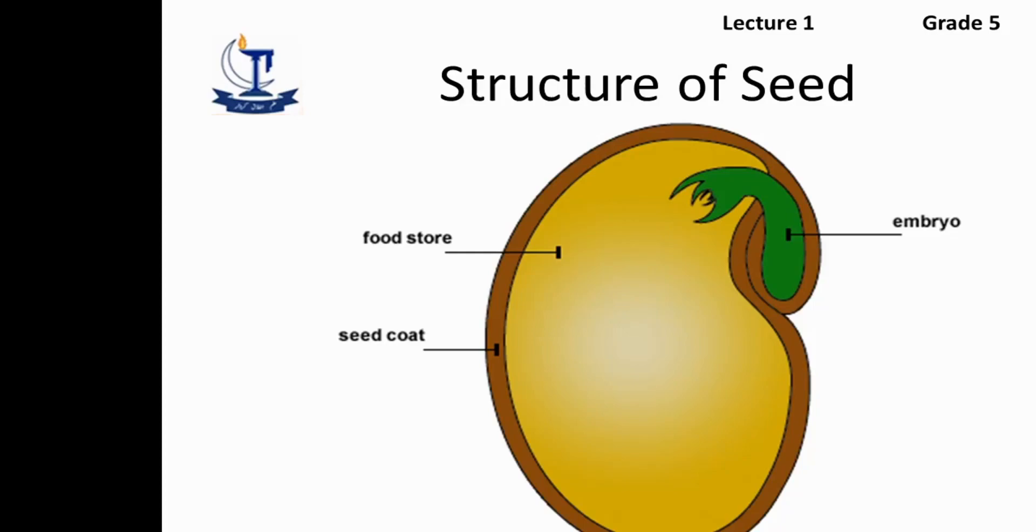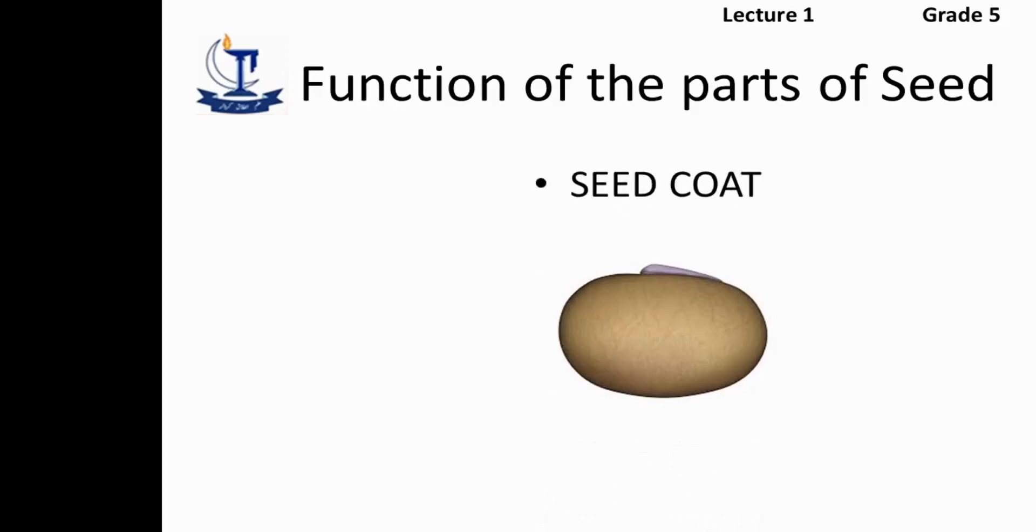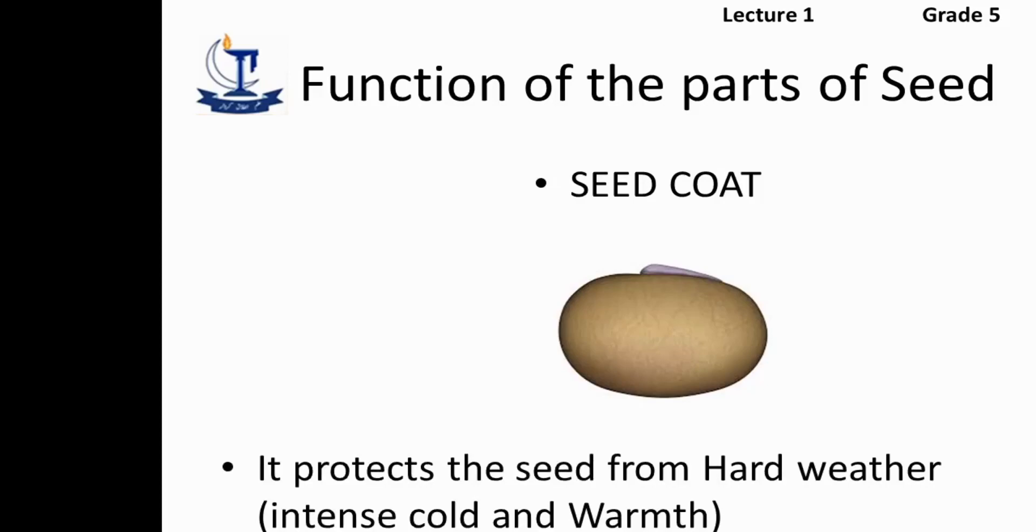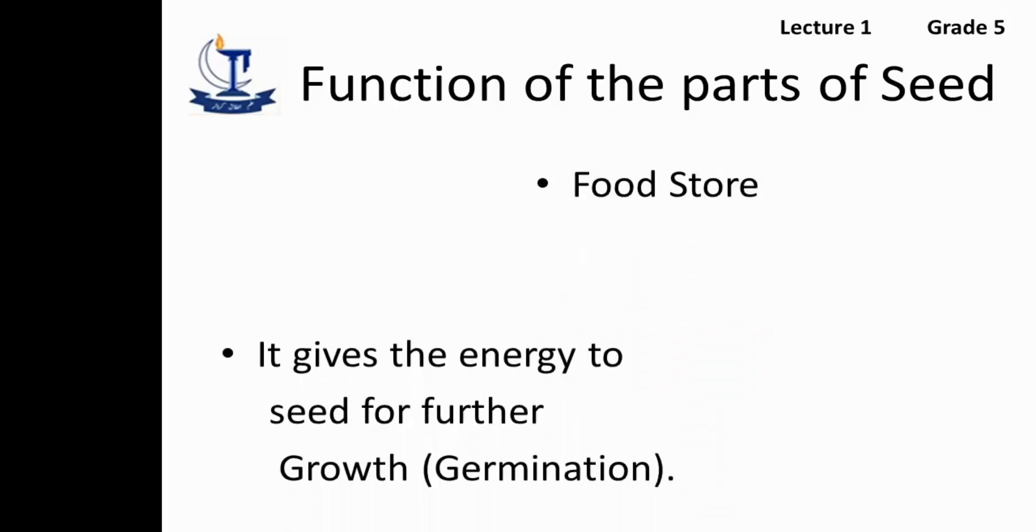Now we study about the function of each part. The first part is seed coat. It is a very hard shell and it protects the seed from harsh weather, from intense cold and intense warmth.